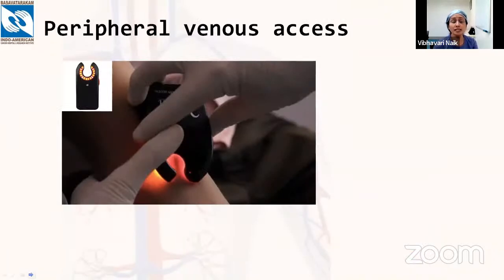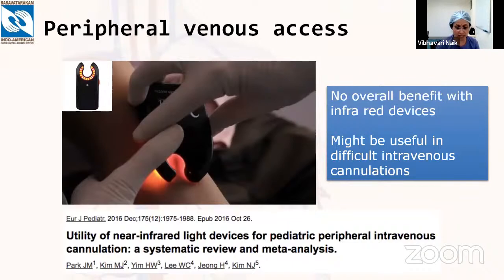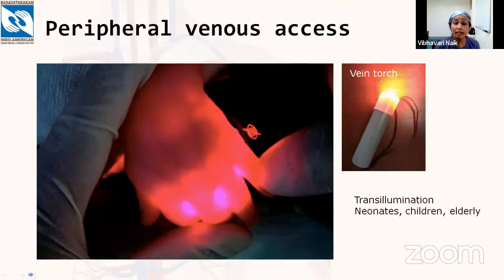When vascular access is difficult, aids can help. A systematic review and meta-analysis showed that infrared devices are not very useful overall, though they may help in some difficult IV cannulations. Transillumination using a vein torch or even a mobile phone light is particularly helpful in neonates, younger children, and elderly patients with thin skin. The disadvantage is that most lights in the operating theater must be switched off for adequate darkness.